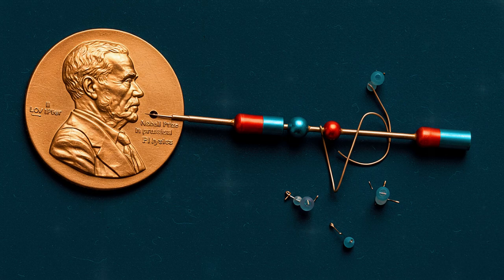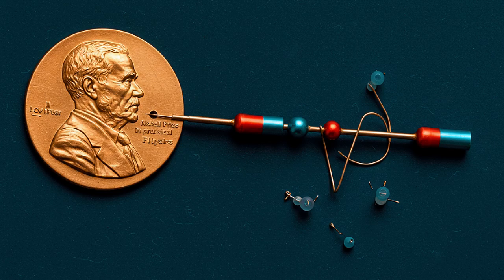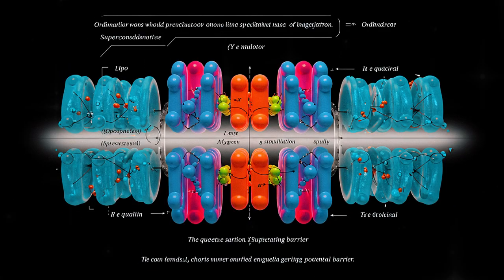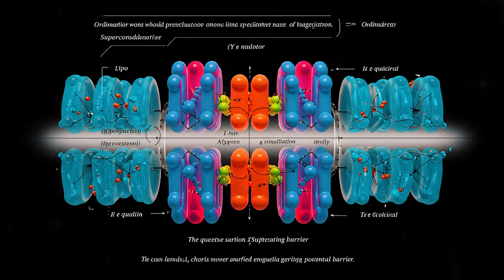Should the electron acquire additional energy, its wave configuration grows increasingly intricate. The cloud might elongate and develop lobes resembling a three-dimensional blossom with petals extending in various directions. These are designated as p-orbitals, for instance, 2px, 2py, and 2pz. Each one assumes a different spatial orientation.